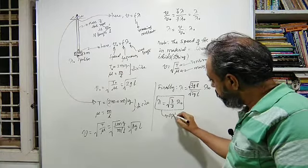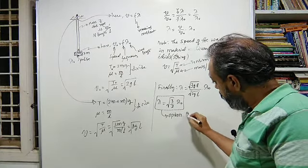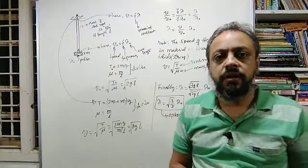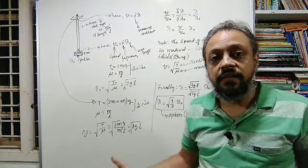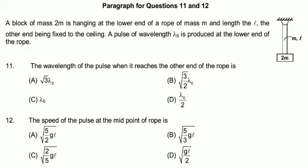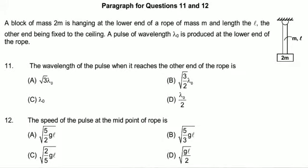So for this question, option B is our answer. The second question in the paragraph is: the speed of the pulse at the midpoint of the rope is — option A: √(5/2·GL), option B: √(5/3·GL), option C: √(2/5·GL), option D: √(G/2L).